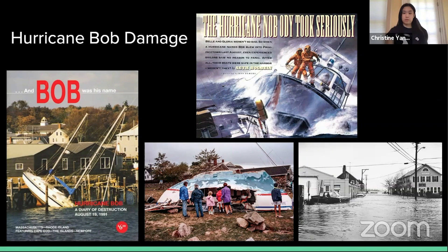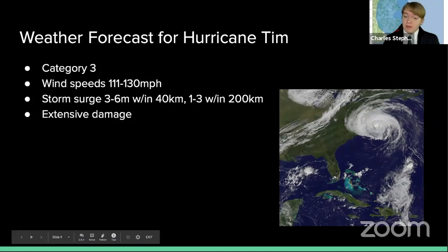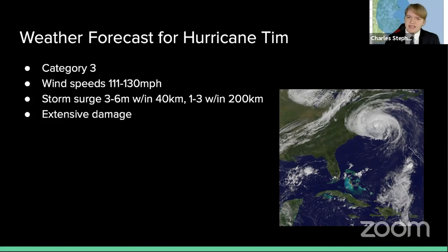Next, we'll have Charlie, our weatherman, who will give you an update on the storm itself. The hurricane will likely be a Category 3 on the Saffir-Simpson hurricane wind scale, categorized as strong with speeds of 111 to 130 mph. We're expecting three to six meters of storm surge within 40 kilometers of the hurricane path, and one to three meters within 200 kilometers. Clusters of thunderstorms should begin to take over in this large disturbance, and where that occurs is uncertain and could cause a significant shift to the forecast of this system.